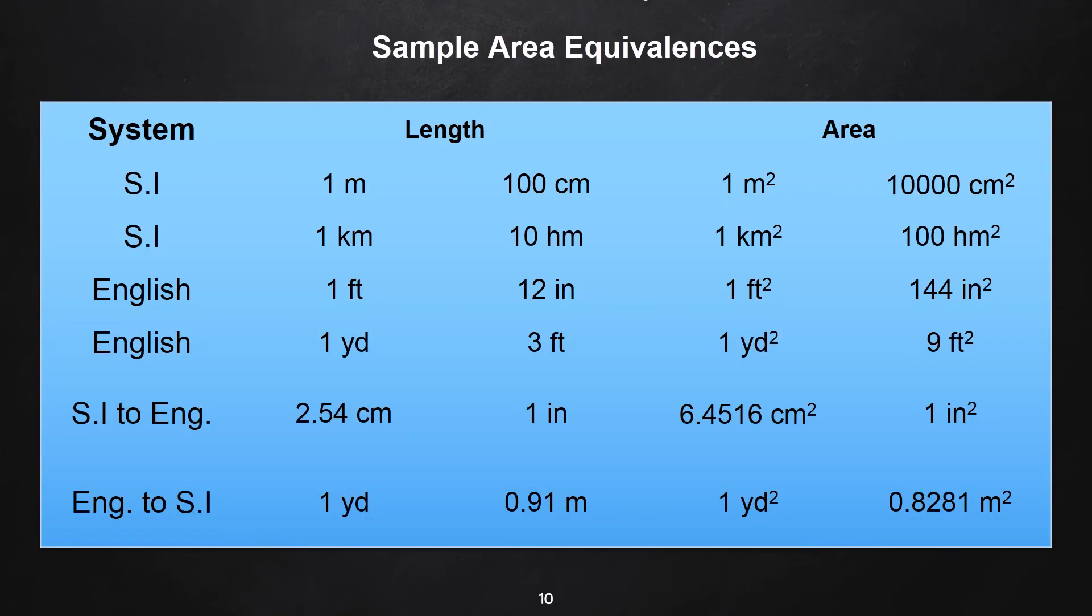Take a look at these sample equivalences of units of area. To get the equivalence in terms of area, just square the basic relationship of units in length. Since 1 meter is 100 centimeters, then in area, 1 m² is 10,000 cm². And so on.